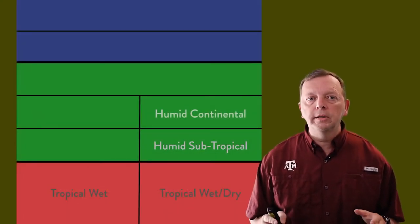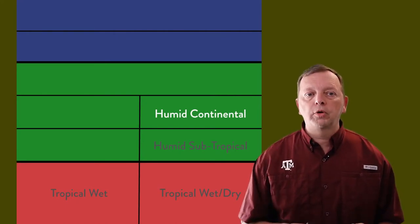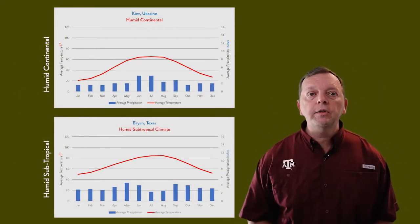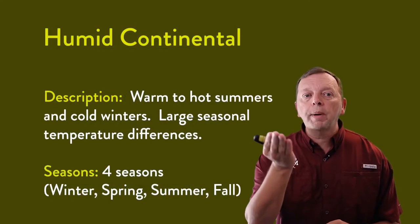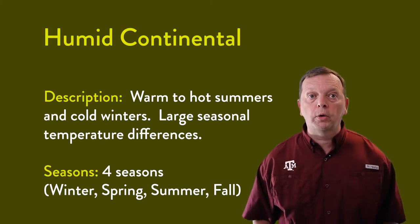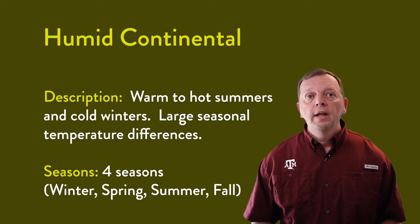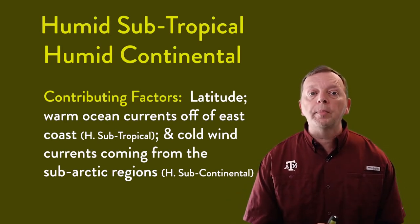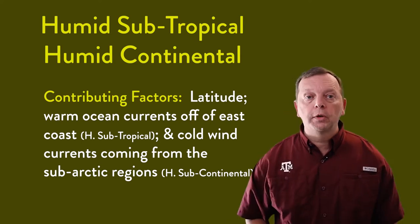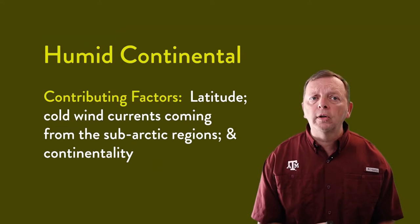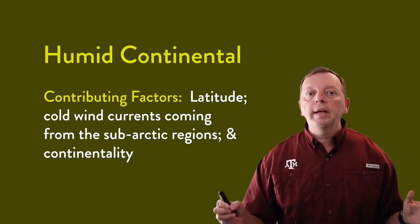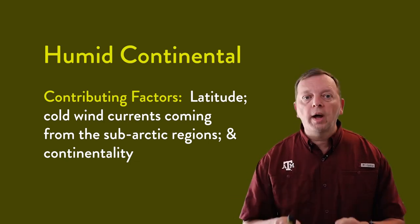The second east coast climate is the humid continental climate, which lies further from the equator than the humid subtropical — usually between 37 and 60 degrees latitude. Looking at the climagraphs, the humid continental climate has a much stronger seasonal pattern of temperature and precipitation, with winters that are much drier and colder than the summers. The major climate factors are latitude, warm ocean currents for the humid subtropical climate, and cold wind currents from the poles for the humid continental climate. Another factor is continentality: the farther an area is from the ocean, the less effect ocean currents have on that region. So these are our two temperate east coast climates.